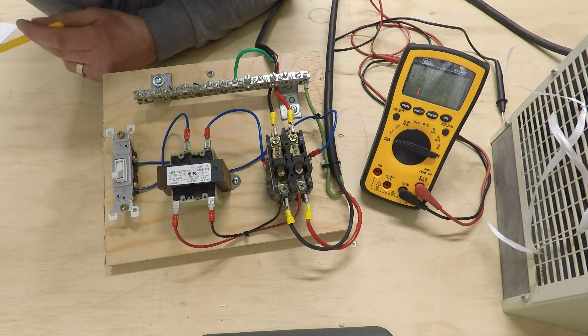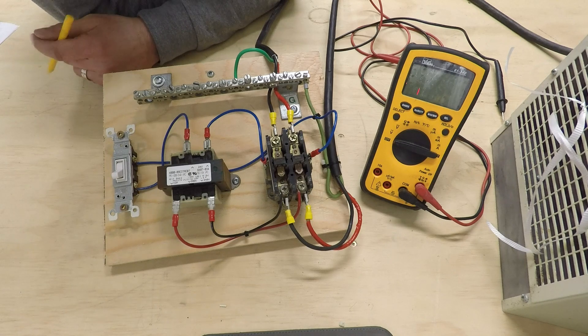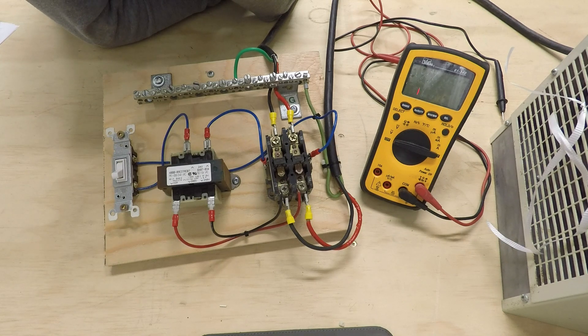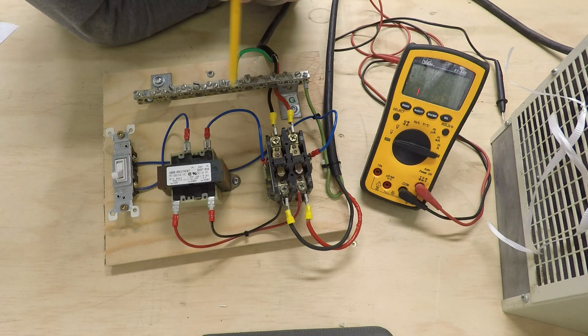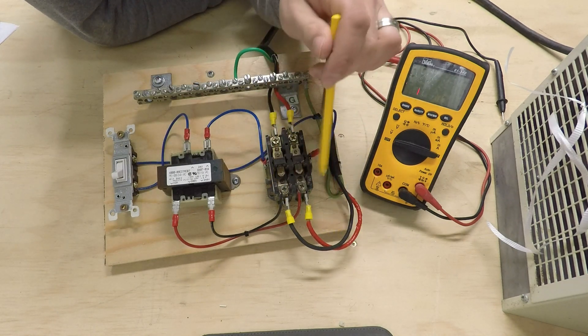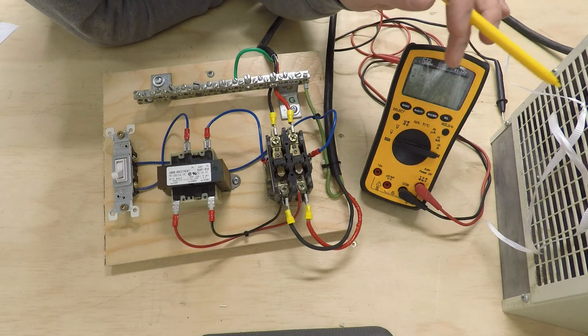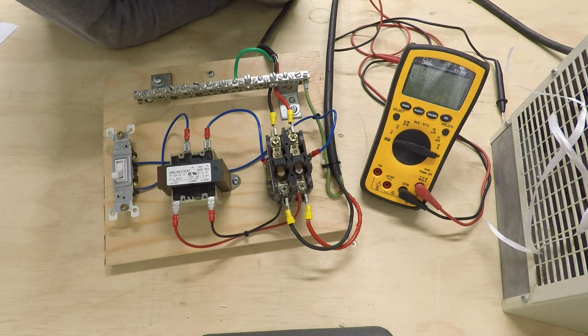This video I'm going to show you about troubleshooting a contactor you typically see used in an HVAC unit to control the turning on and off of the compressor. So I got a little test jig set up here. I've got 240 volts coming into the top of the contactor. At the bottom side of the contactor I've got it hooked up to a 240 volt rated fan to kind of simulate the compressor.